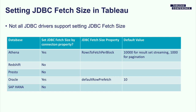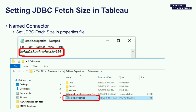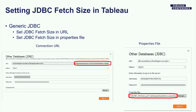How do you set the JDBC batch size in Tableau? First, make sure your JDBC driver supports this setting. If you are using a named connector, customize the JDBC batch size in the property file and put that file in the data sources folder. If you are using generic JDBC, there are two ways: customize the batch size in the connection URL directly, or set it in a property file and upload the property file in the connection dialog. Next, I'll demo how to tune Oracle JDBC performance with JDBC batch size.